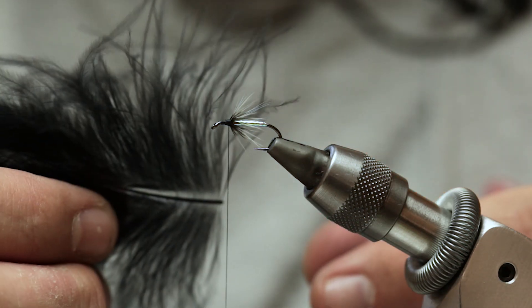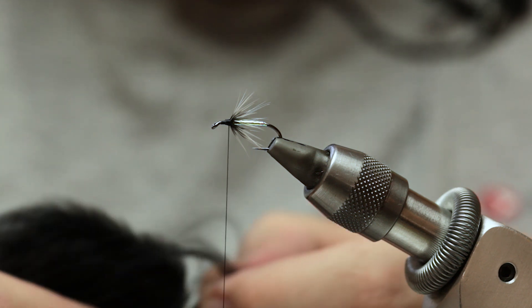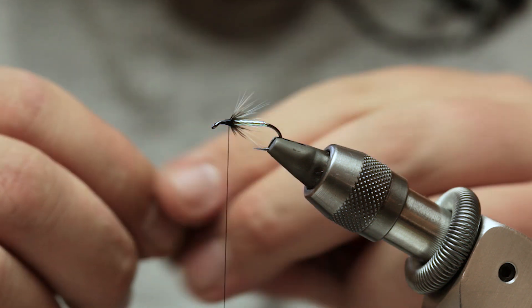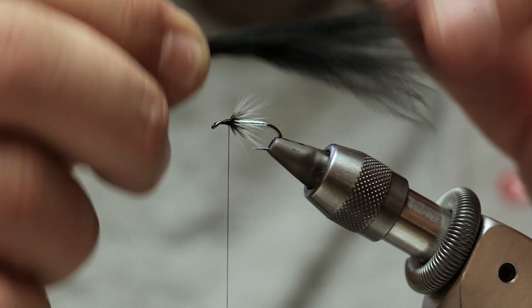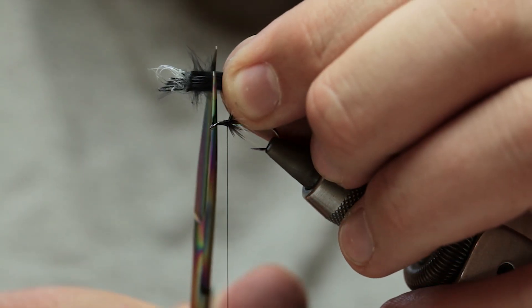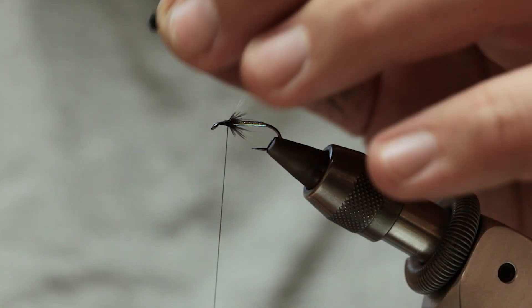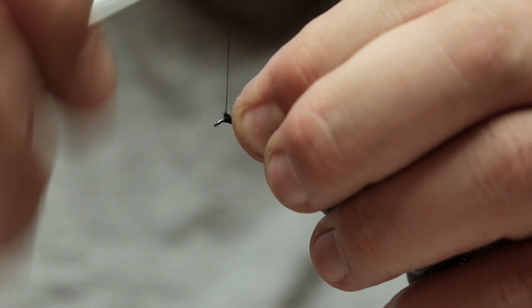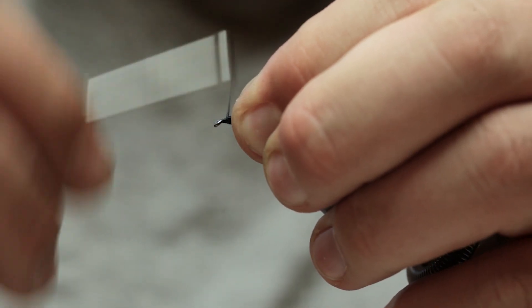Right, so at this point now, get your marabou. Select a nice little bunch for your wing. All I do is I tie it on whole and then trim it back. Turn that one there. I'm going to cut straight, pull all the fluff out, and then hold it on top of the shank. A couple of turns, and then catch it in.